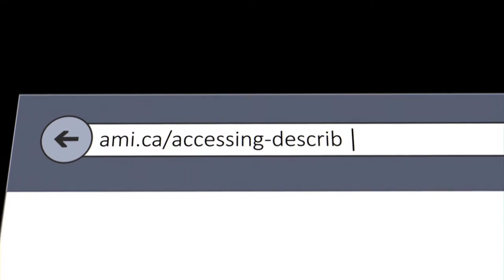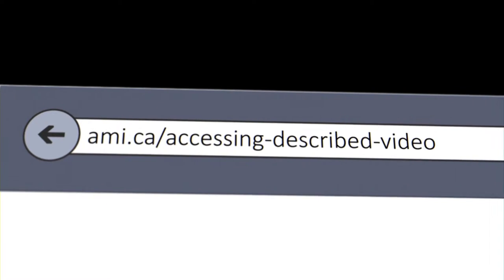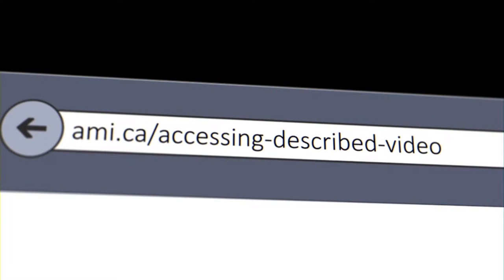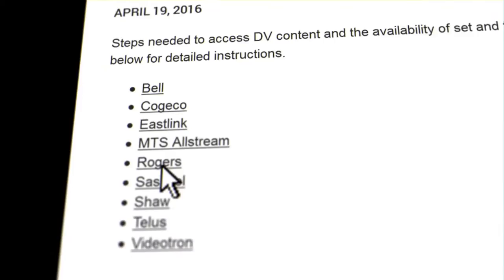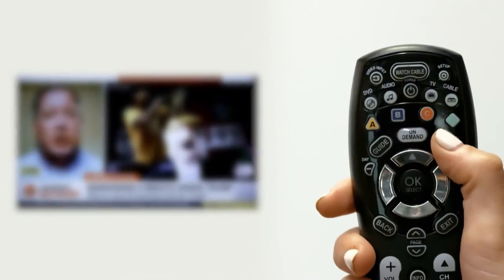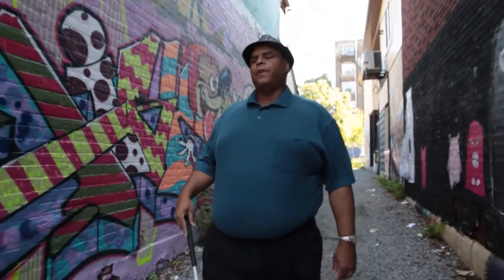Simply head to ami.ca/accessing-described-video, select your cable provider and watch the instructional video. You'll be enjoying all your favorite described shows in no time. Visit ami.ca/accessing-described-video for more information.